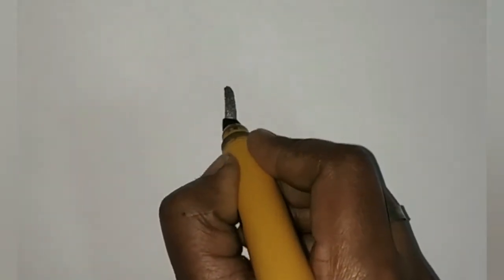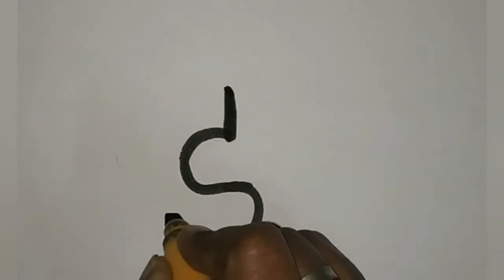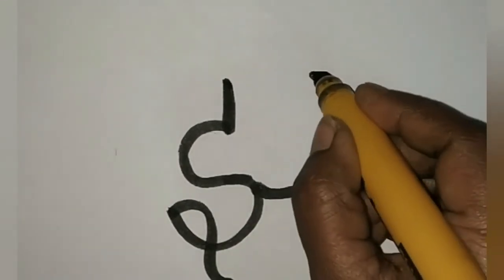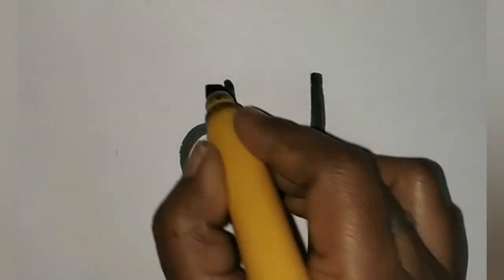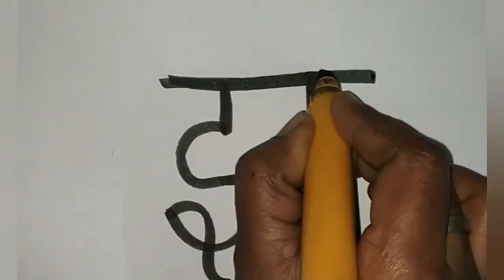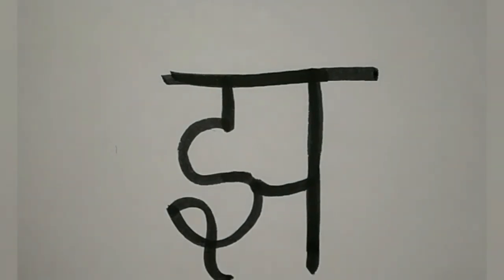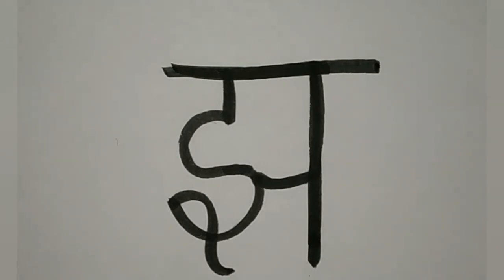Now we will write the next letter. Next letter is J. J. How do you write it? See here. First, standing line. Then curve line. Then curve line. Next, slipping line. Next, standing line. Standing line. And the last, slipping line. Okay? This is J. Okay?